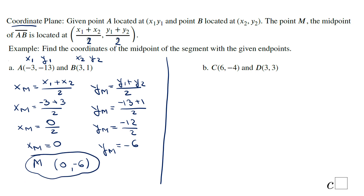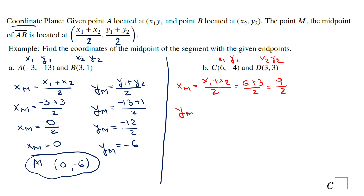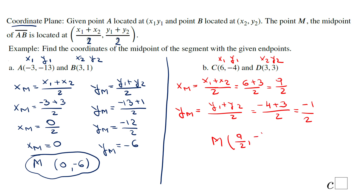For the second example, we have two points C and D. Label them x1, y1, x2, y2. The x-coordinate of the midpoint is x1 plus x2 over 2, which is 6 plus 3 over 2, giving 9 over 2. The y-coordinate is y1 plus y2 over 2, which is negative 4 plus 3 over 2, giving negative 1 over 2. So the coordinate of midpoint M is (9/2, negative 1/2).